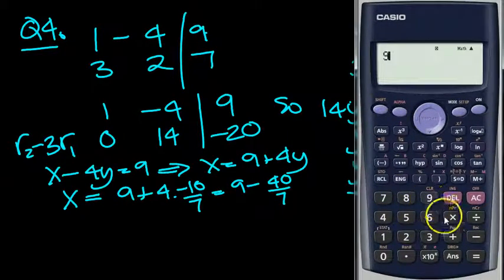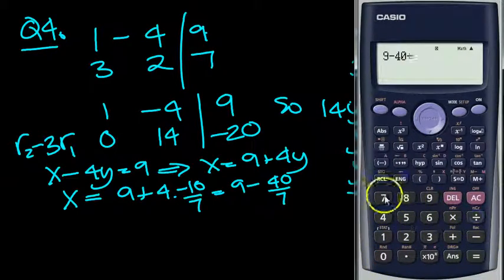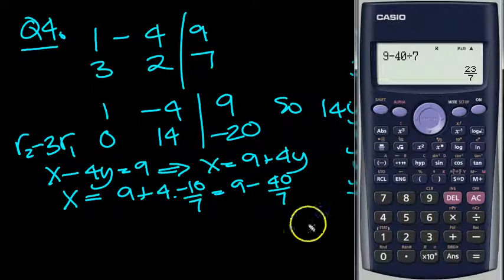Let's get our calculator then. 9 minus 40 divided by 7. 23 over 7.